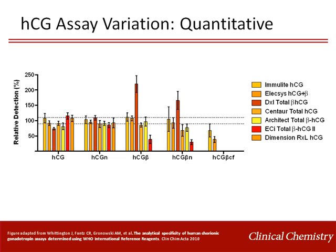The variation in HCG variant detection is clearly revealed with the use of purified HCG preparations. Of the seven HCG assays shown here, only two — the Elecsys HCG and the ADVIA Centaur HCG plus beta — were able to detect all five of the HCG variants tested. Five assays detected all but the beta core fragment, and one assay detected only the dimeric HCG variants, which was consistent with the assay's labeling.